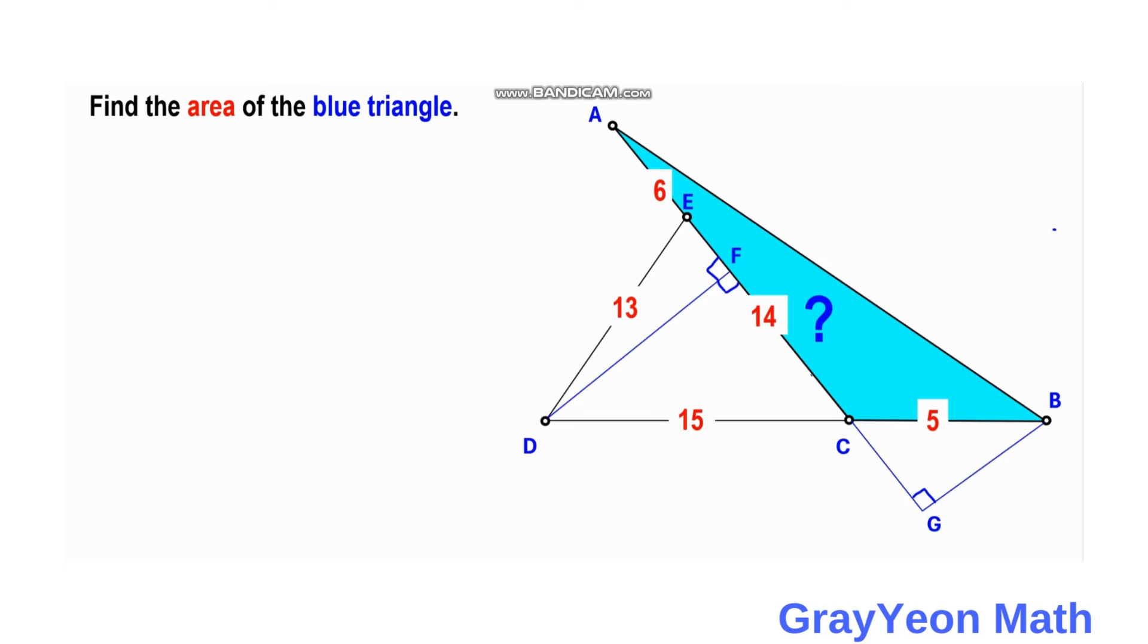For now, we will compare these two right triangles, EFD and FDC. They have the same height, so FD. Let's call this as H, this FD. And the respective hypotenuses are 13 and 15. Next, we call this EF as X, and this FC is 14 minus X, because 14 is the total.